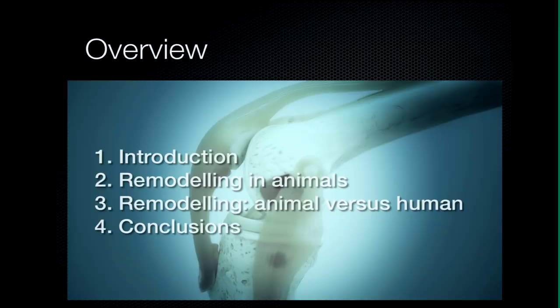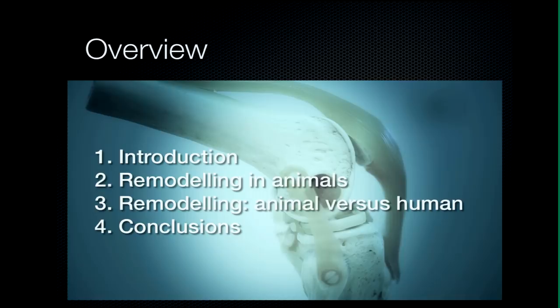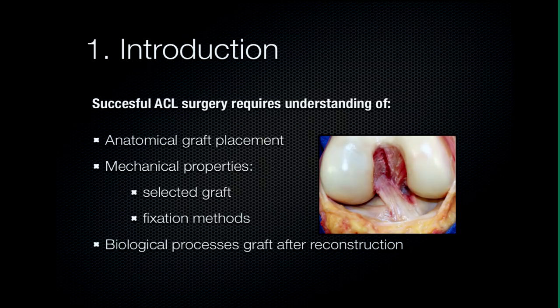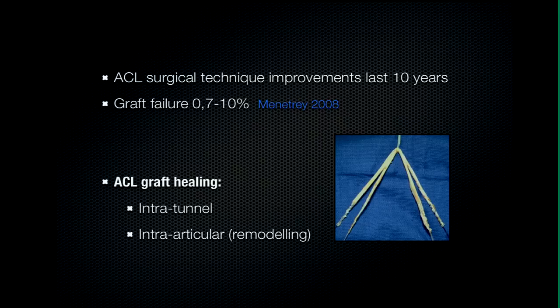Small overview of my presentation: I'll start with an introduction on the topic, give you the animal data on remodeling and why this is important to know, compare that to human data, and finish with conclusions. Successful ACL surgery requires understanding of anatomic graft placement, the mechanical properties of the selected graft, the fixation methods and their characteristics, and the biological processes that the graft will undergo after reconstruction. There's still a graft failure prevalence of 10%, and when we talk about ACL healing, we can talk about healing inside the tunnels or intraarticular healing — and that's what I'd like to focus on: remodeling.